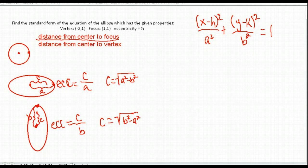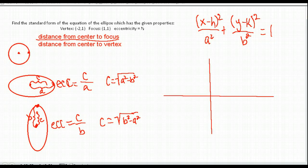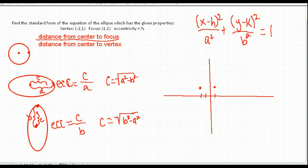We need the center, A, and B, but they gave us none of those. We have a vertex at (-2, 1), a focus point at (1, 1), and the eccentricity is equal to 1/2. We can tell we should have a center somewhere to the right.